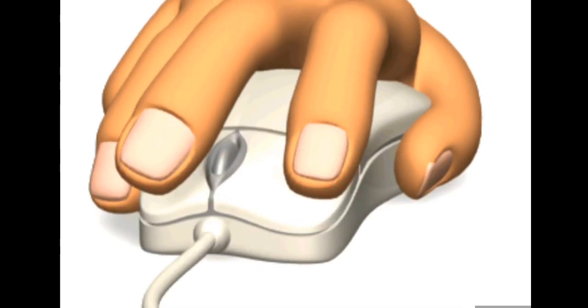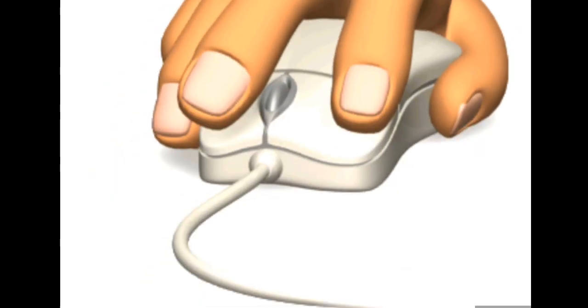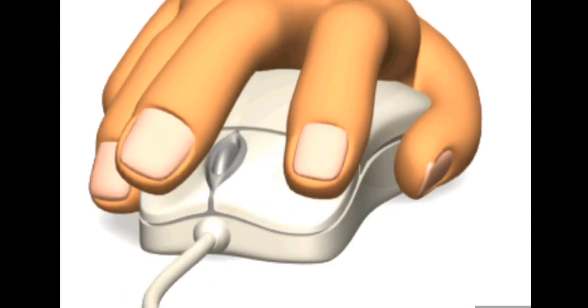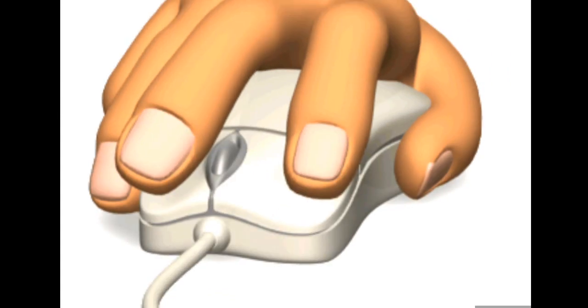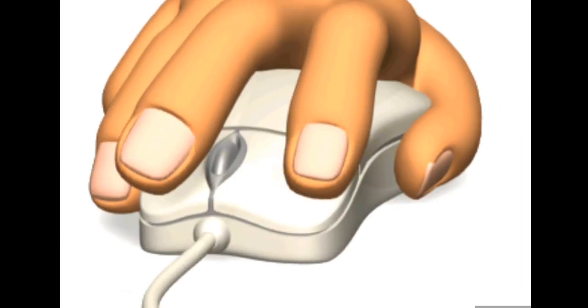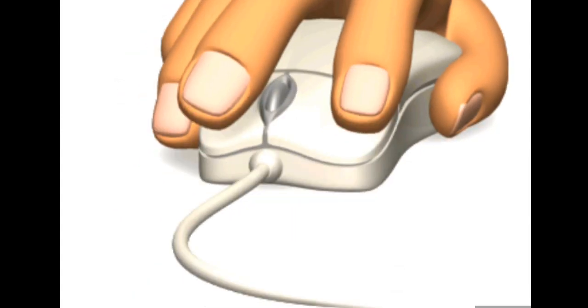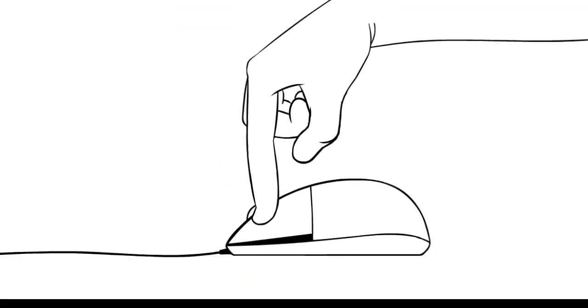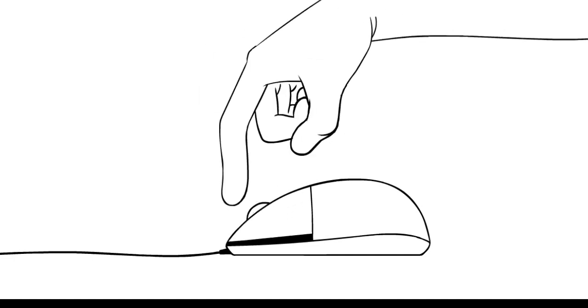When a mouse moves on a flat surface, the cursor on the screen also moves in the direction of the mouse movement. A mouse generally has two or three buttons and contains a roller or rubber ball on its base. The movement of the ball on its underside is converted into data which is sent to the CPU through a cable. The mouse then shows where we are currently pointing on the screen.